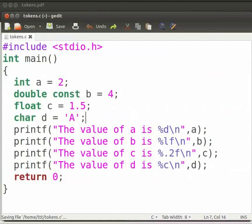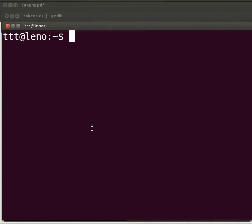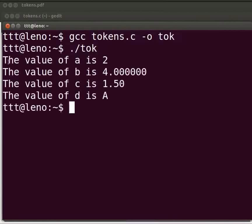Please open the terminal window by pressing Ctrl, Alt, and T keys simultaneously on your keyboard. To compile, type gcc space tokens dot c space hyphen o space tok, then enter. To execute, type dot slash tok.